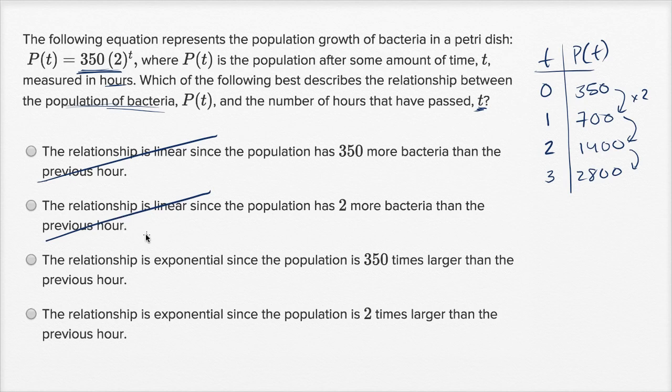The relationship is linear—no, I don't even have to finish reading that. The relationship is exponential. Yep, that's what it looks like. Since the population is 350 times larger than the previous hour—no, no, no. It's not 350 times larger. It's two times larger. To get 350 times larger, it would be 350 that you would be raising to the exponent. So we're going to rule that one out.